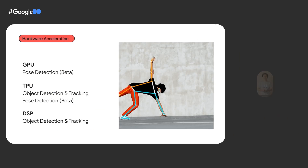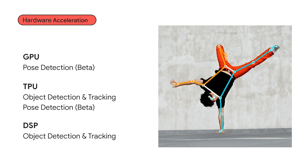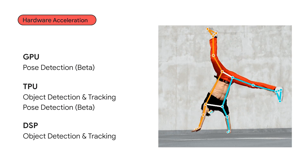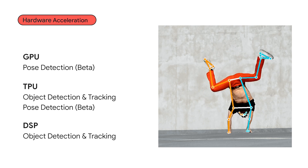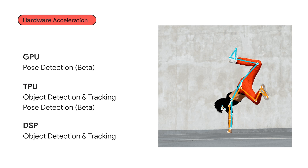We pushed the limit of performance through hardware acceleration. By enabling GPU acceleration for pose detection, we reduced the pipeline latency by up to 43% based on internal benchmarking. On Pixel 6, we also enabled TPU acceleration for object detection and tracking, as well as pose detection, and reduced their pipeline latencies by as much as 28% and 50%, respectively.